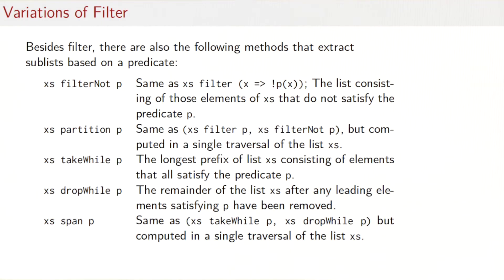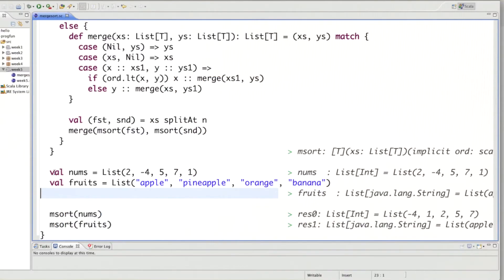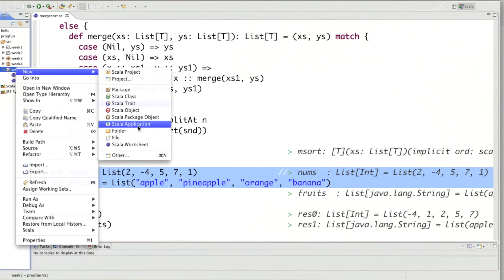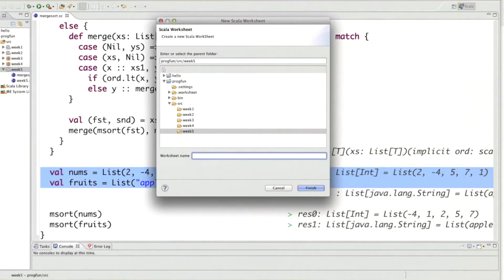Besides filter, there are also other methods that extract sublists from a list based on some predicate. You see the list of these methods here. Rather than going through the list, I just wanted to show them in action in a new worksheet. So what I'm going to do is I'm going to take the data definitions of the previous worksheet and create a new worksheet. Call this list fun.